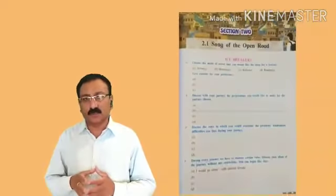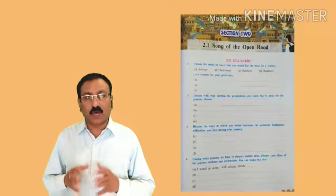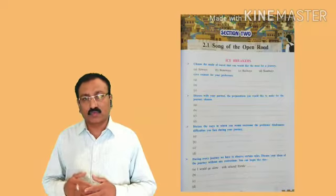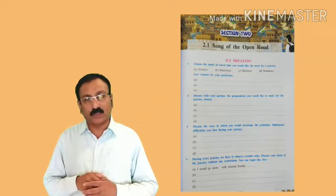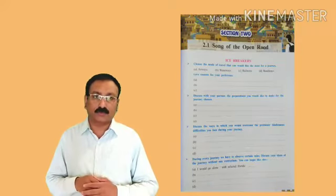I will deal with the second section, that is poetry, and in this section we have eight poems. Before we start the actual poem or actual lesson, it is very essential to discuss all the activities given in Ice Breakers. Before each lesson or each poem, a section entitled Ice Breaker is given. Ice Breakers lead us to the actual story of that particular prose lesson or the subject of that particular poem, and therefore Ice Breakers need to be discussed before we begin the actual poem.